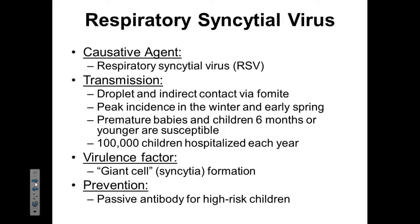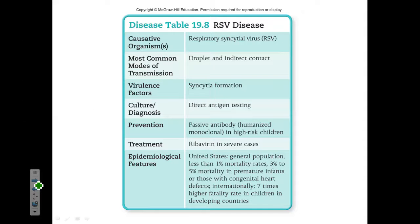Syncytia is a condition where multiple cells fuse due to viral infection. Respiratory syncytial virus is known as the giant cell virus and is notorious for forming those syncytia — those large multinucleated cells that normally should not be present. We have found that we can give passive antibody treatment for high-risk children to help prevent the outbreak of this infection. There is currently no vaccine.